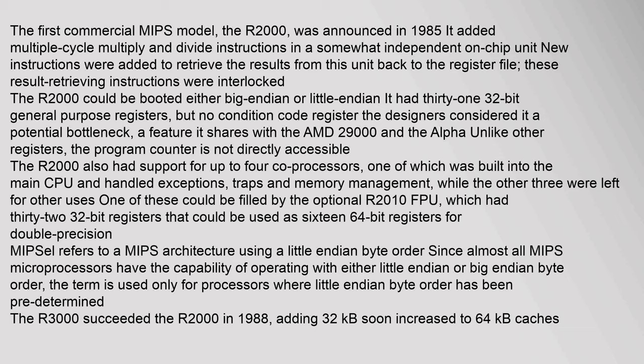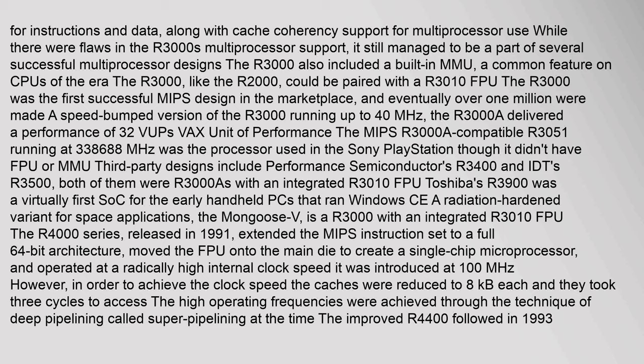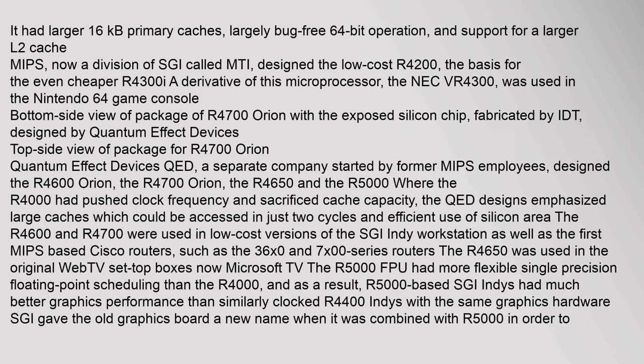MIPSL refers to a MIPS architecture using little-endian byte order. The R3000 succeeded the R2000 in 1988, adding 32 KB (soon increased to 64 KB) caches for instructions and data, along with cache coherency support for multiprocessor use. The R3000 also included a built-in MMU. The R3000 was the first successful MIPS design in the marketplace, with over one million eventually made. A speed-bumped version ran up to 40 MHz with larger 16 KB primary caches, largely bug-free 64-bit operation, and support for a larger L2 cache.